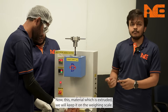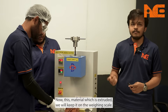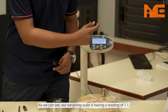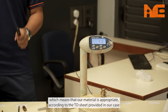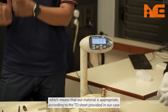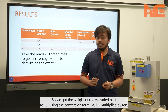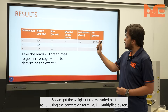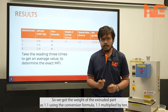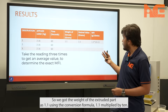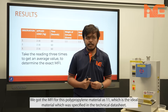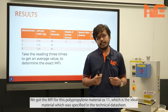The extruded material is placed on the weighing scale. As we can see, our weighing scale reads 1.1 grams, which means our material is appropriate according to the technical data sheet. Using the conversion formula — 1.1 multiplied by 10 — we get the MFI for this polypropylene material as 11, which matches the ideal value specified in the technical data sheet.